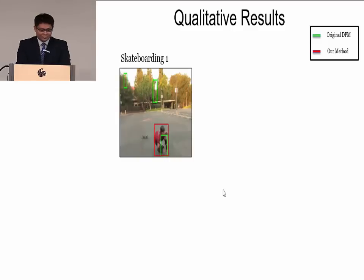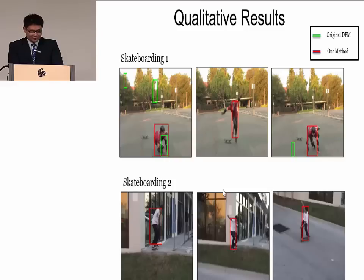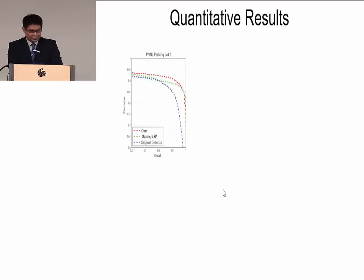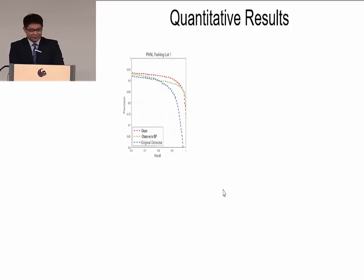For the skateboarding dataset, we draw results on the same frame. We can see the DPM detector fails to detect a person in these frames, but our method works very well. The precision-recall curve shows that the x-axis is recall and the y-axis is precision. The blue dotted line shows the original DPM detector. The red dotted line is our method. The green dotted line is our method without superpixel features, using HOG features instead. Our method is better than the original DPM detector, and our method with superpixel features is better than using HOG features.